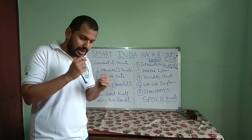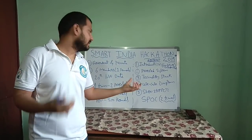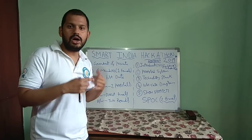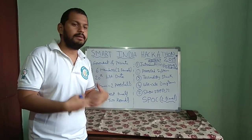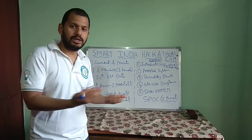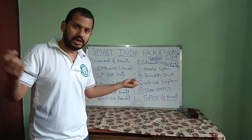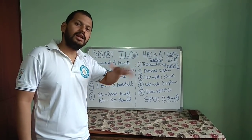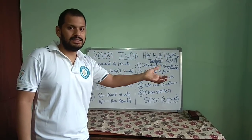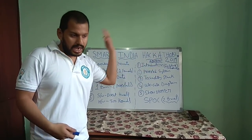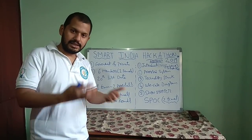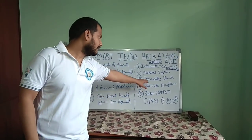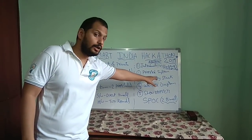The third point is the technology stack. If you are working in hardware, mention whether you are using Arduino, Raspberry Pi, or specific sensors — the sensors will vary depending on your problem statement. For software, technologies like Java, artificial intelligence, CNN, or Python will come into the picture. For ECE, Mechanical, or Civil, mention any relevant sensors, materials, or components. Whatever technology you are using should be listed under your technology stack.